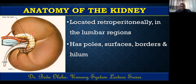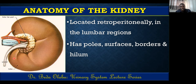Each kidney has an anterior surface and posterior surface. The posterior surface rests on the posterior abdominal wall. The anterior surface is related to various abdominal organs depending on which kidney. For the left kidney, the anterior surface is related to the adrenal gland, the fundus of the stomach, the spleen, the body of pancreas, the descending colon, and the jejunum. For the right kidney, the anterior surface is related to the right suprarenal gland, the right lobe of the liver, the duodenum, the ascending colon, and the coils of the ileum.